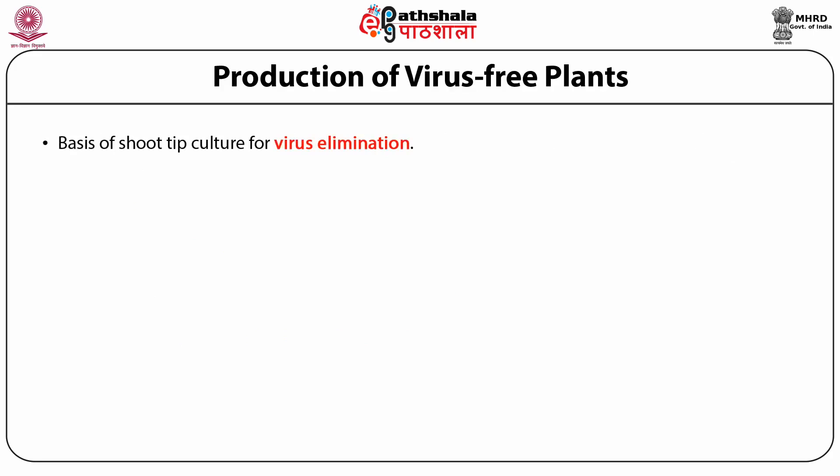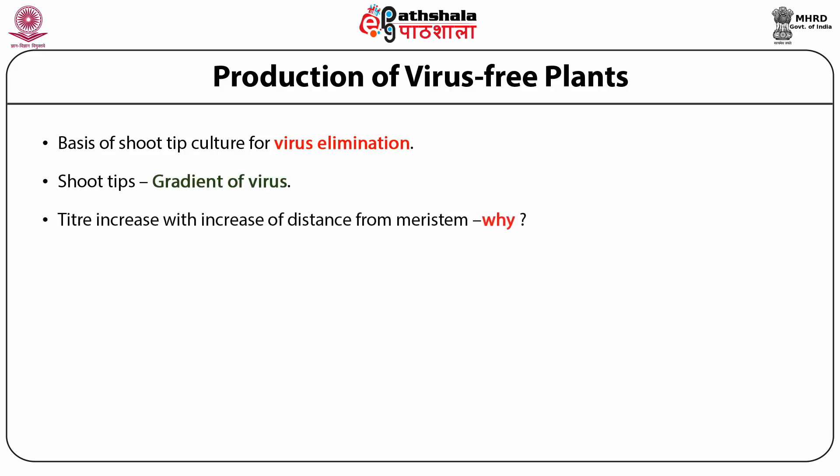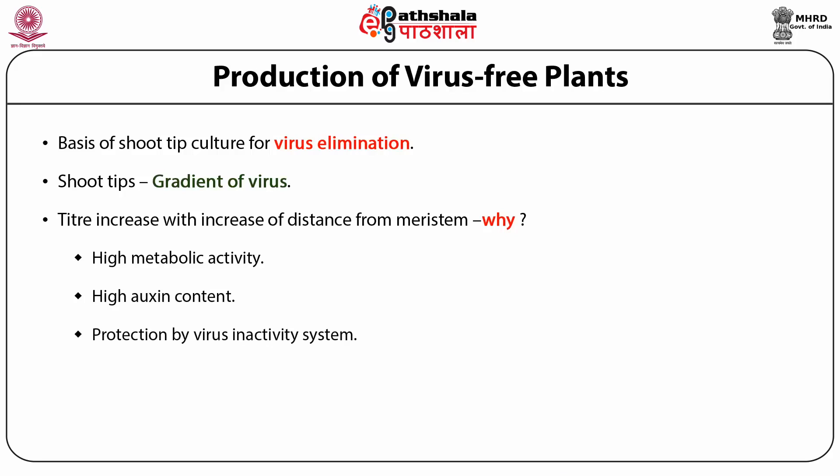What is the basis of shoot tip culture for virus elimination? There is a gradient of virus in the infected plant body, and the titer of the virus increases with distance from the meristem. The suggestions are that it is because of the high metabolic activity in the meristem that the virus does not persist there. The meristem tip produces auxin, which probably discourages the multiplication of viruses. And there seems to be a virus inactivity system present in the shoot tip.